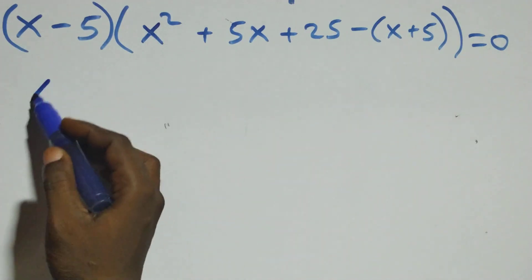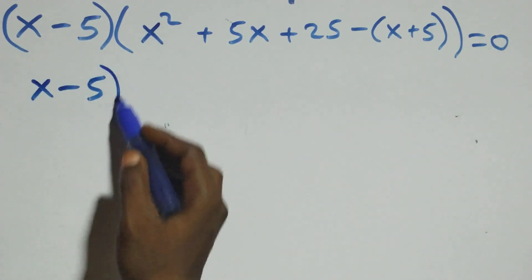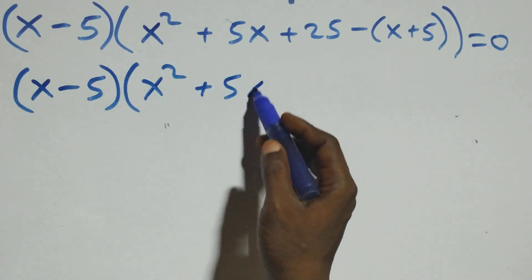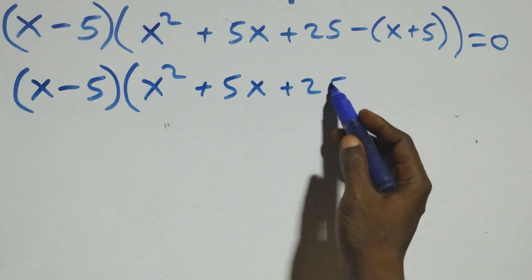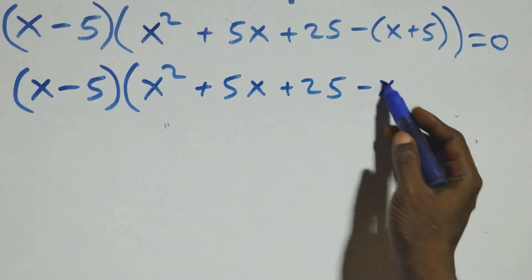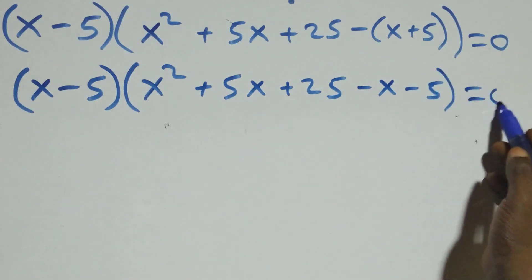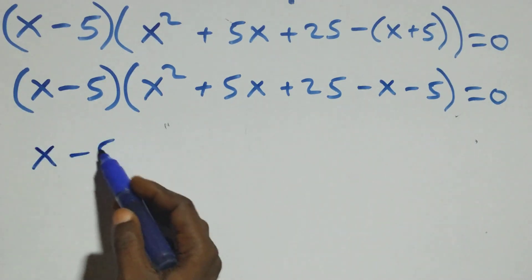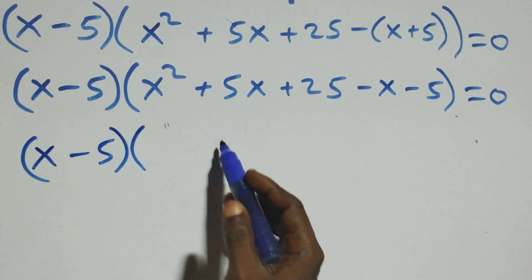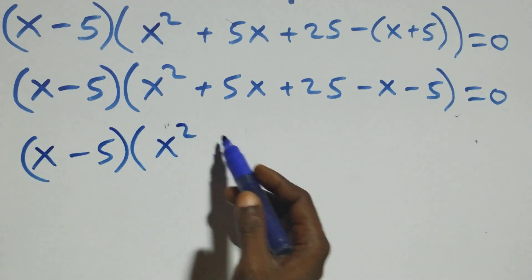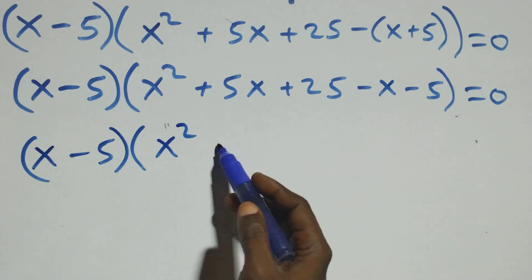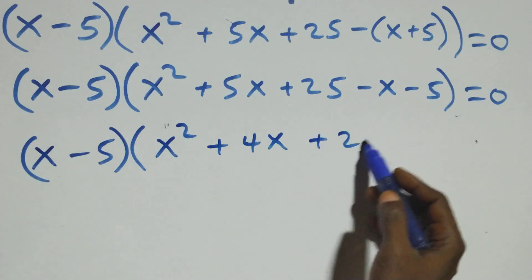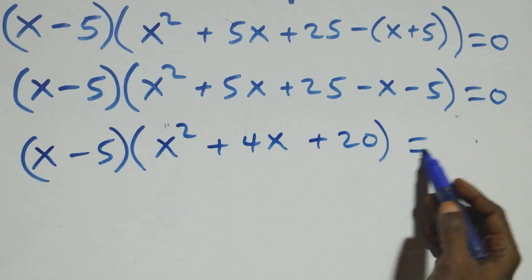Expanding inside: (x minus 5) times open bracket x square plus 5x plus 25 minus x minus 5 close bracket equals to 0. Simplifying: 5x minus x becomes plus 4x, and 25 minus 5 becomes plus 20. So we have (x minus 5)(x square plus 4x plus 20) equals to 0.